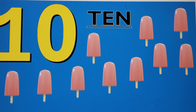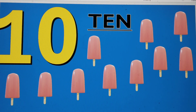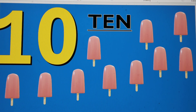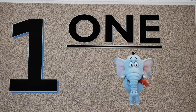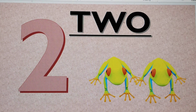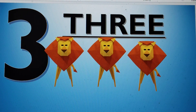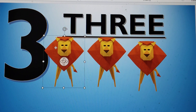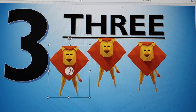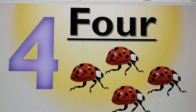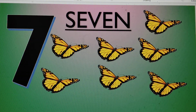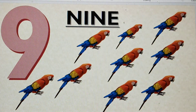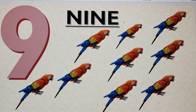So we have learned numbers from 0 to 10. Let's recap. The first number was 0, the second was 1, the third was 2, the fourth was 3, the fifth was 4, the next was 5, then 6, 7, 8, 9, and the last number was 10.